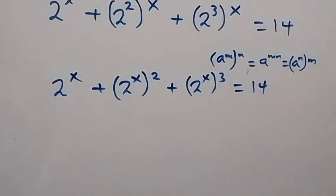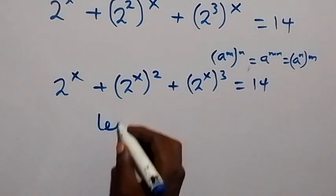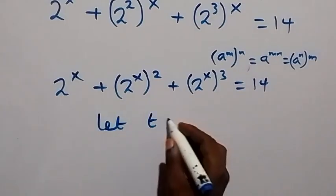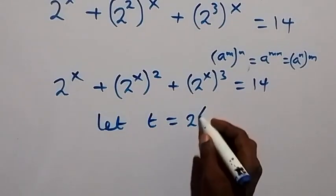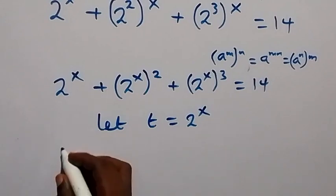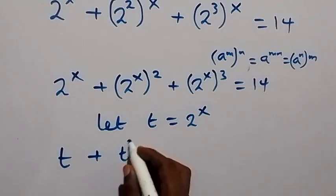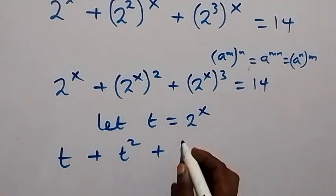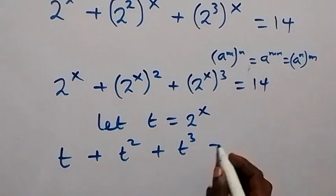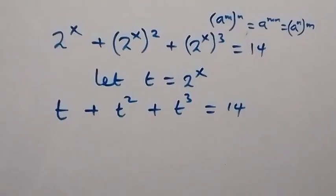The next step: we have 2 raised to power x, so let's use a letter to represent that. Let t be equal to 2 raised to power x. Then this equation will become t plus t squared plus t cubed equals to 14.